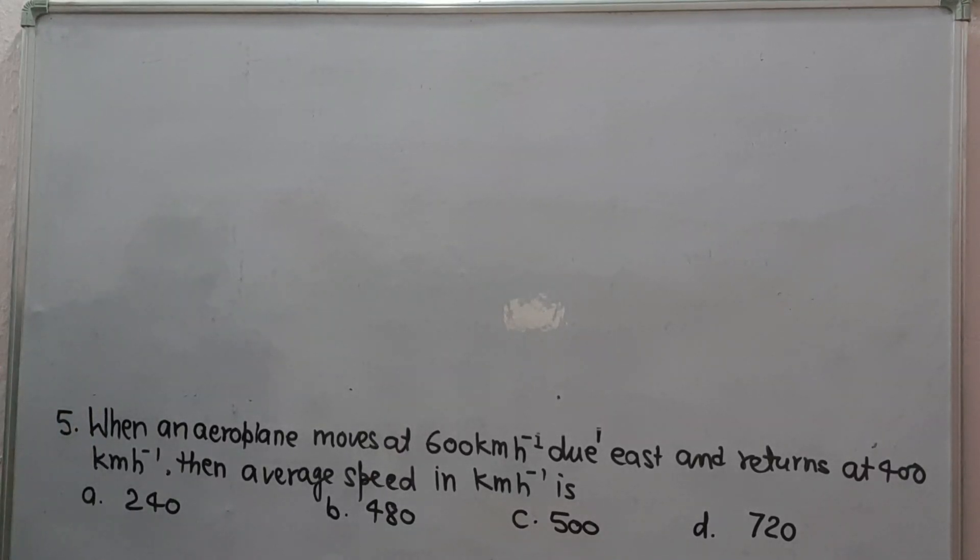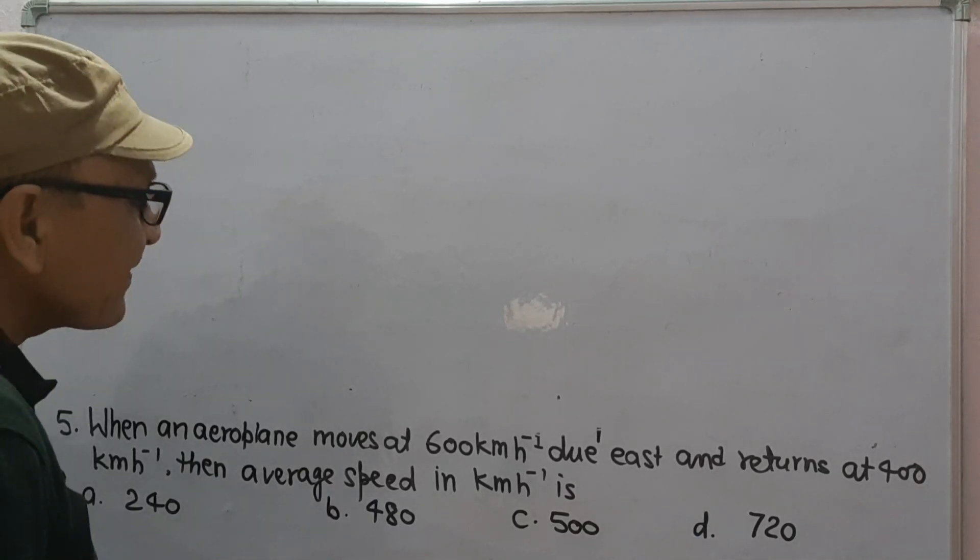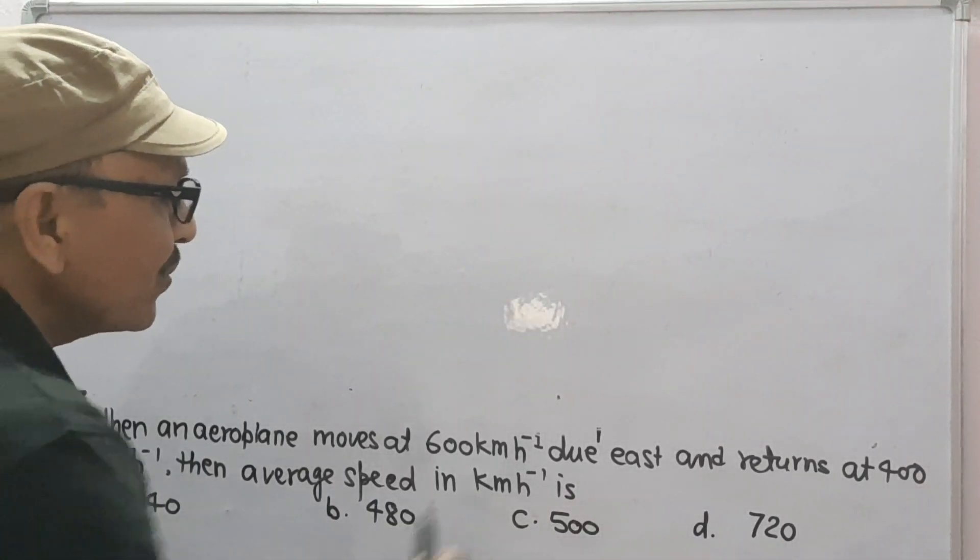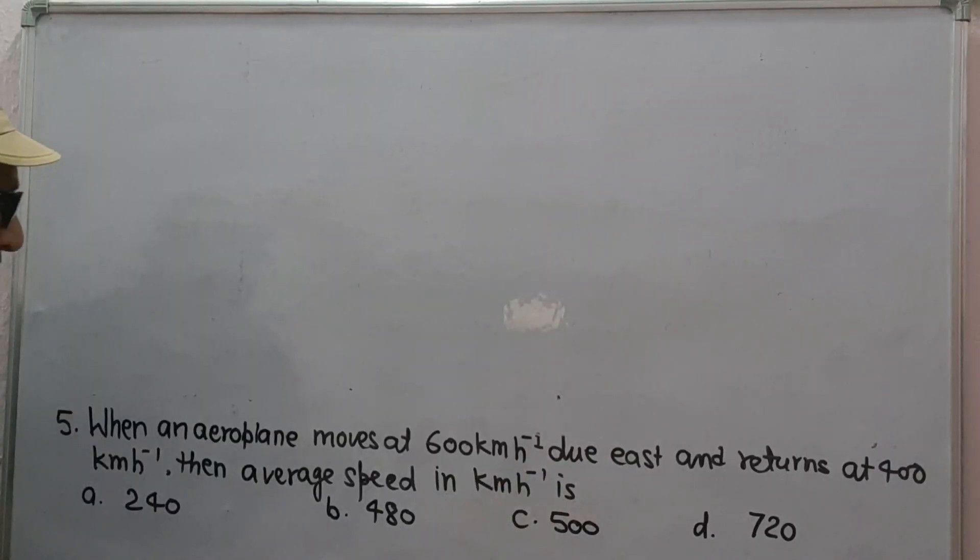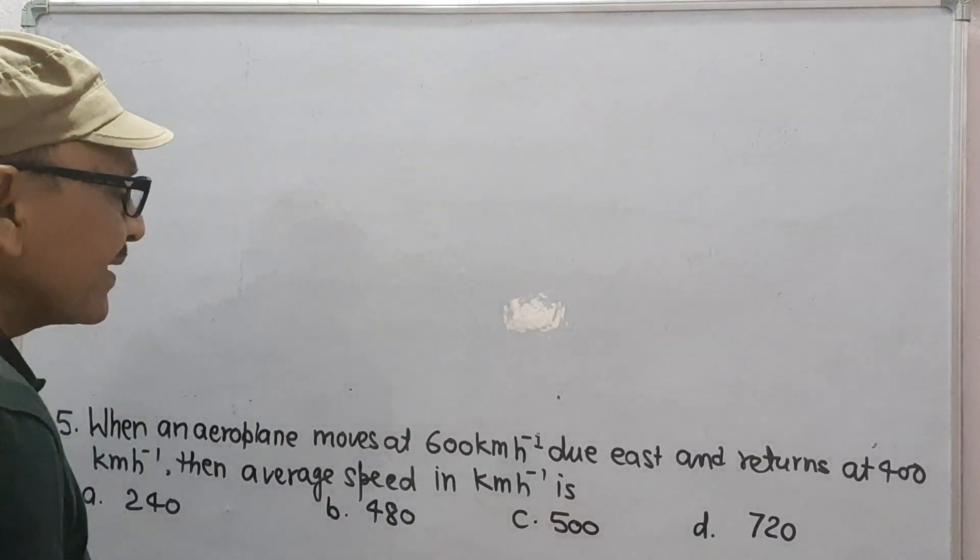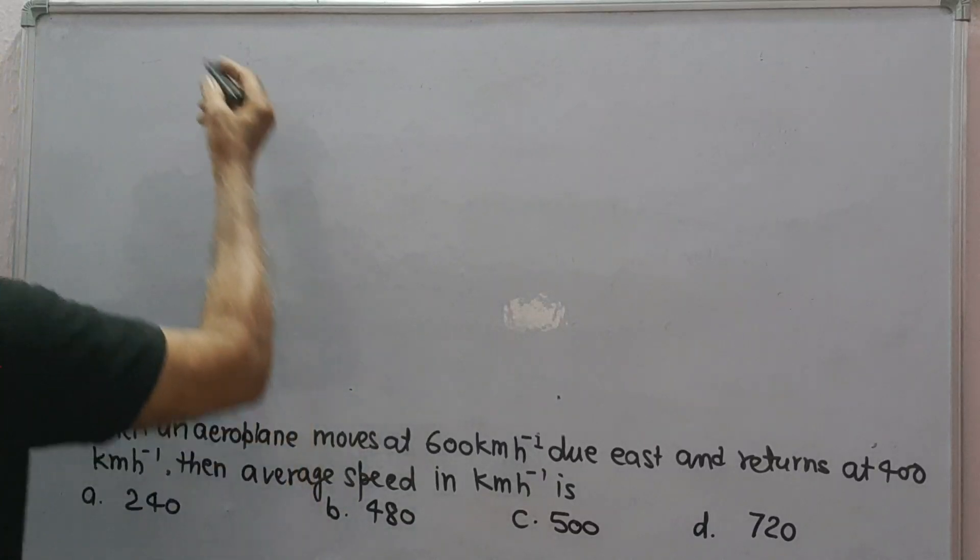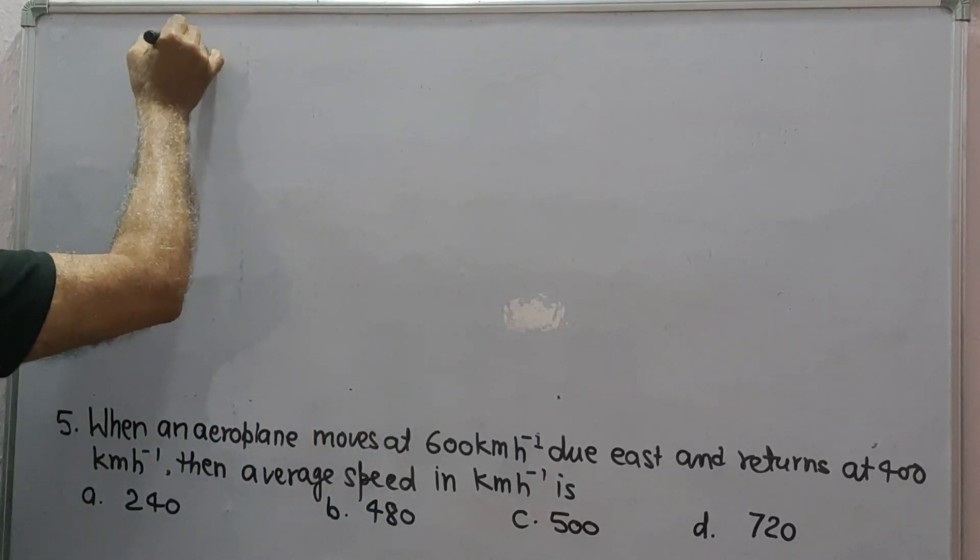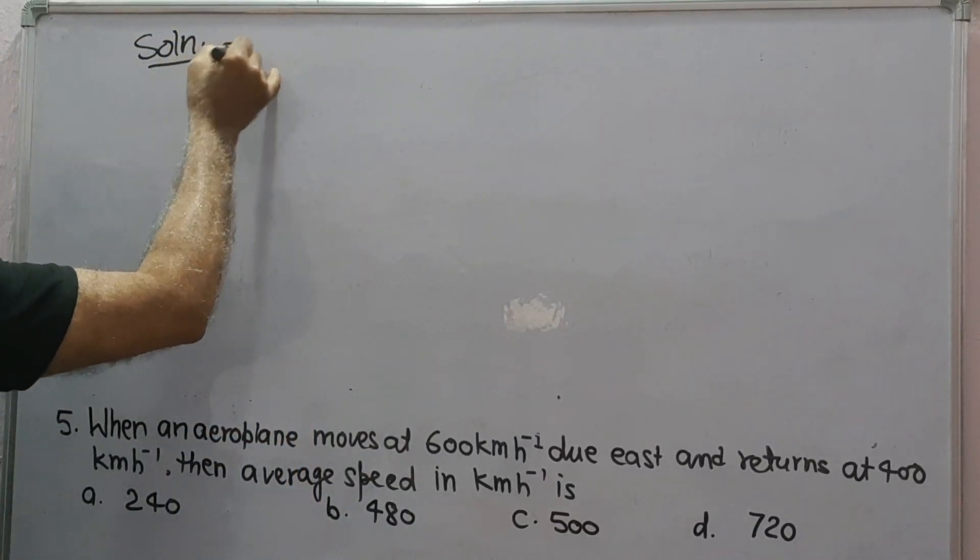Next question number five: when an aeroplane moves at 600 km per hour due east and returns at 400 km per hour, then the average speed in km per hour is - options are these. Solution to question 5.